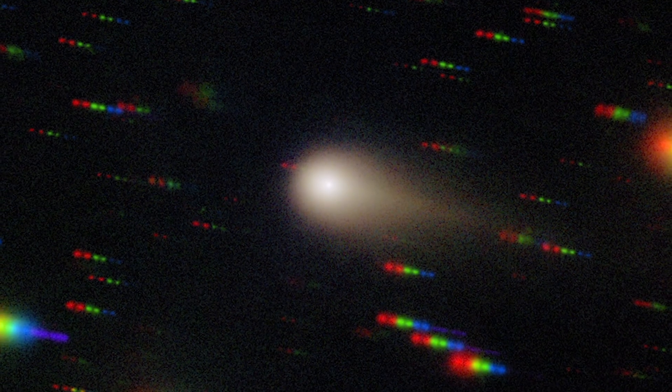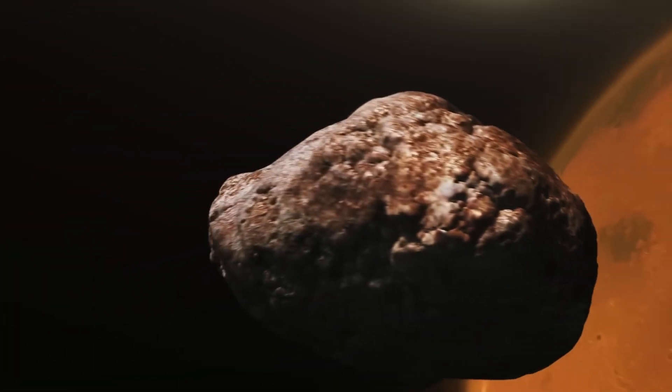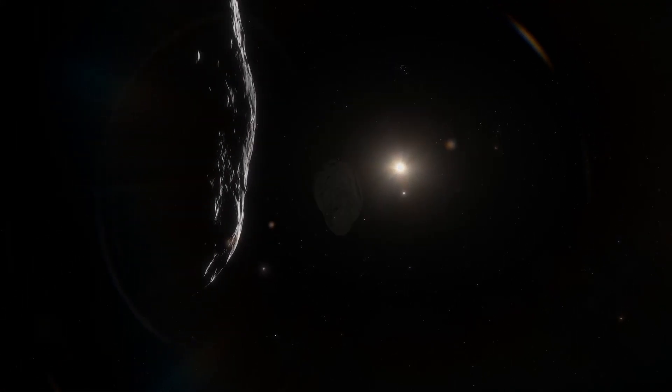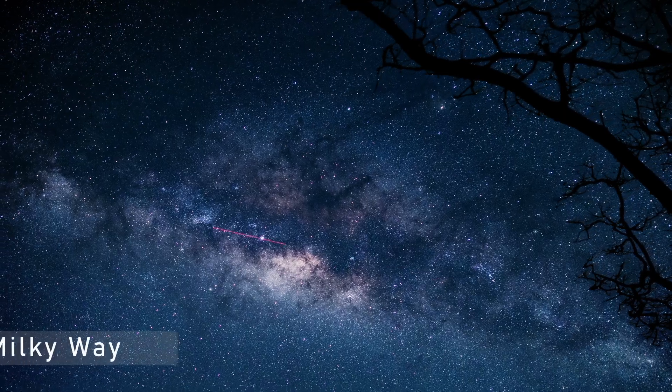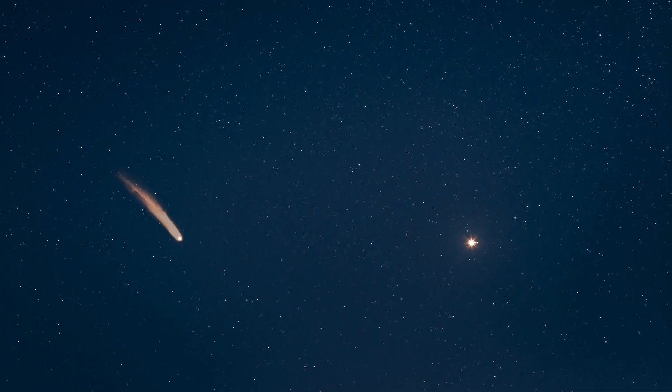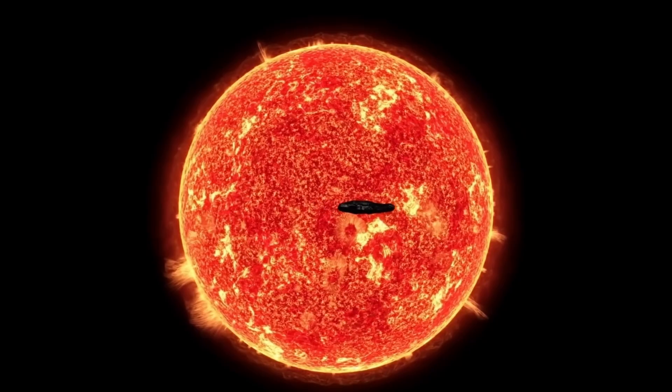That meant 3i Atlas had likely been adrift for hundreds of millions of years, maybe longer, so long that its original system had moved, its stellar signature erased by time. Its chemistry suggested formation in the thin disk of the Milky Way, the region populated by relatively young, sun-like stars, but that was as specific as anyone could get. A body without a birthplace, a wanderer without a home.